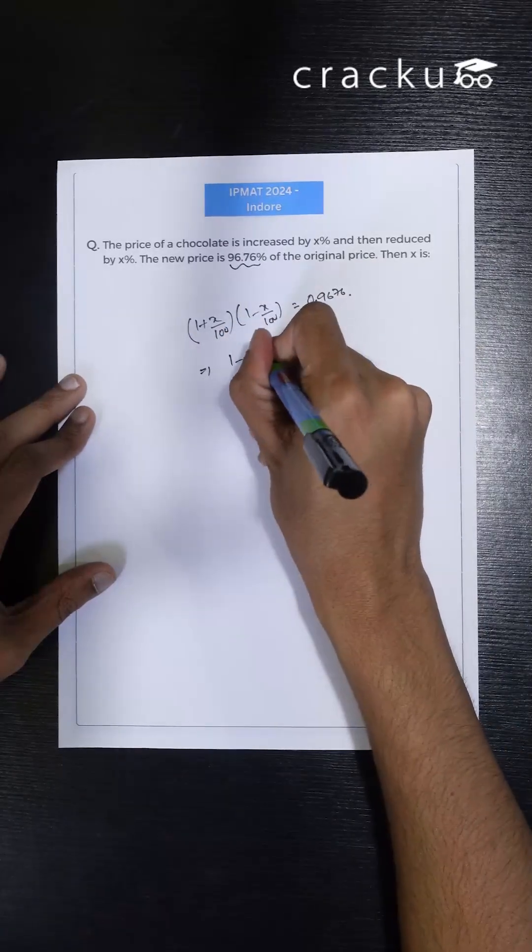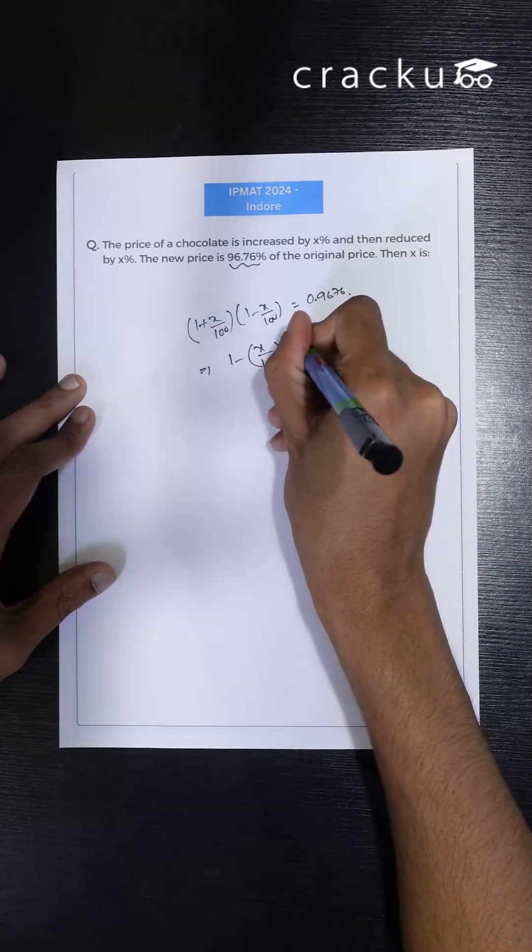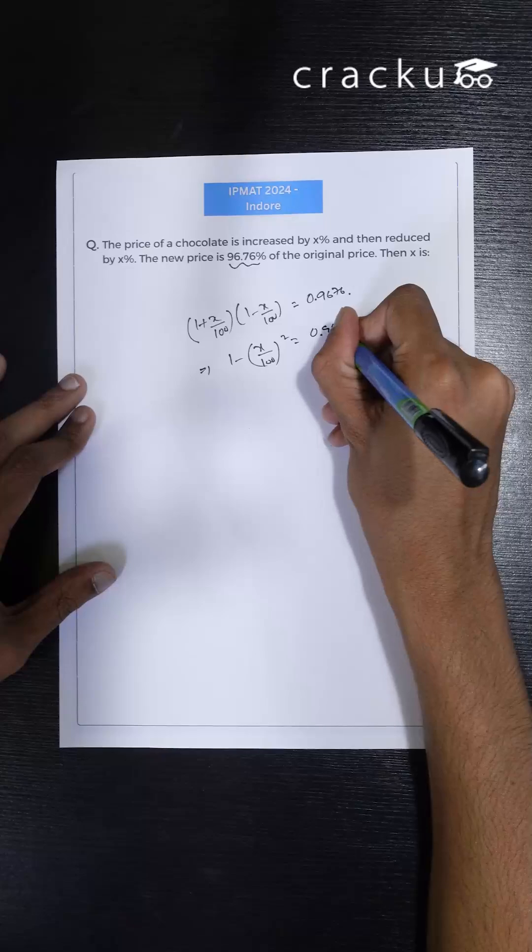This thing I can write as 1 minus x by 100 square. This equals to 0.9676.